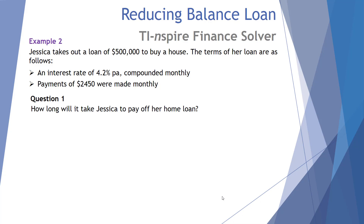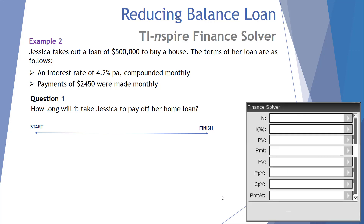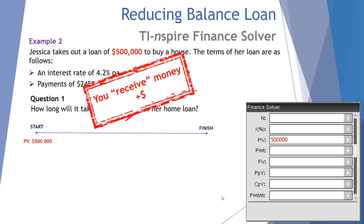Example two: Jessica takes out a loan of $500,000 to buy a house. The terms are an interest rate of 4.2% per annum compounded monthly, with payments of $2,450 made monthly. Question one: how long will it take Jessica to pay off her home loan? Here's our timeline from start to finish, and here's the finance solver, empty. We start with a present value of $500,000 — positive because it's money received from the bank — and a future value of zero. N, the number of months, is our unknown.